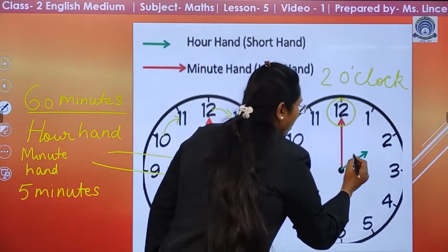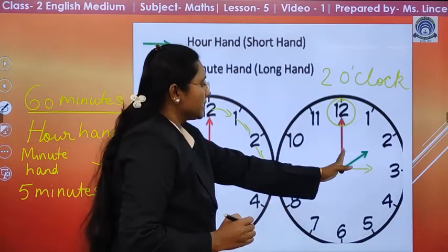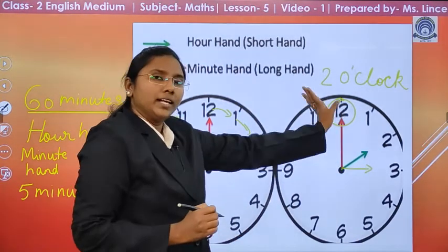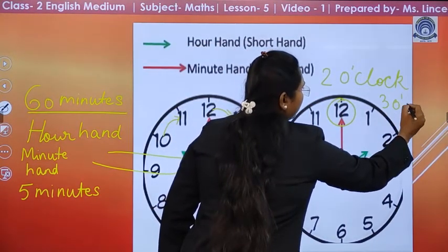Now, if the small hand is on 3, and the minute hand is on 12, then it shows 3 o'clock.